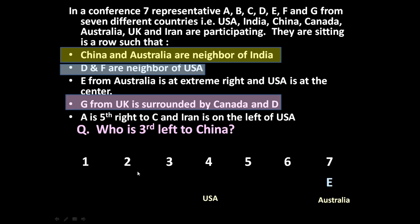If C is at position 1, the right side goes 1, 2, 3, 4, 5 — A would be at position 5. But if C is at position 2 or 3, A would fall outside the 7 seats. So the only valid position for C is position 1, placing A at position 6 — 5th right to C. Iran is on the left of USA, and since USA is at the centre, Iran occupies a position to the left.